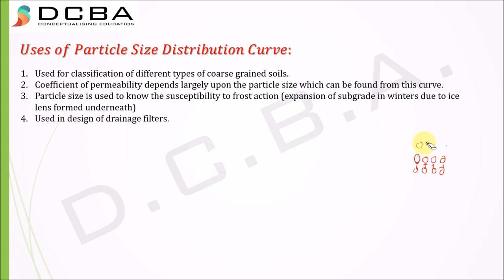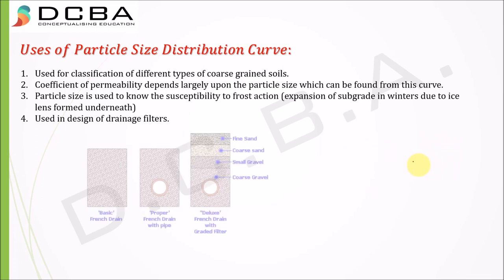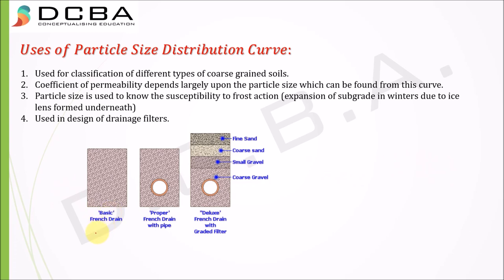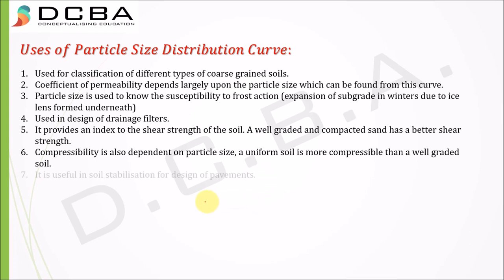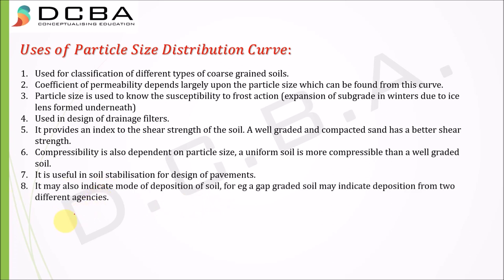Used in the design of drainage filters - this is a deluxe French drain with graded filter. Above there are small gravels, coarse sand, fine sand, all of them are present. This fine, coarse, small we can find using particle size distribution curve. It provides an index to the shear strength of the soil. A well graded and compacted soil has better shear strength. Compressibility also depends on particle size. A uniform soil is more compressible than a well graded soil.